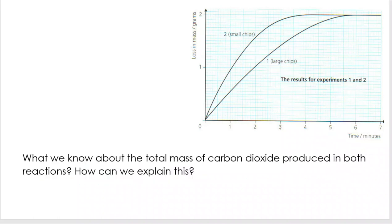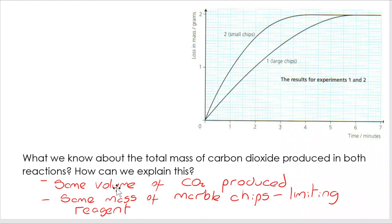Next question. We know the total mass of carbon dioxide produced in both is actually the same. They both level off at the same point at just around 2 grams. Why is that the case? Again, what we're looking for here is really important information. We are making the same volume of CO2. We may have got there faster with the small chips, but actually the marble chips, we had the same mass of them. They may have been cut up into smaller pieces, but they were the limiting reagent. So they determine what mass of carbon dioxide can be made.